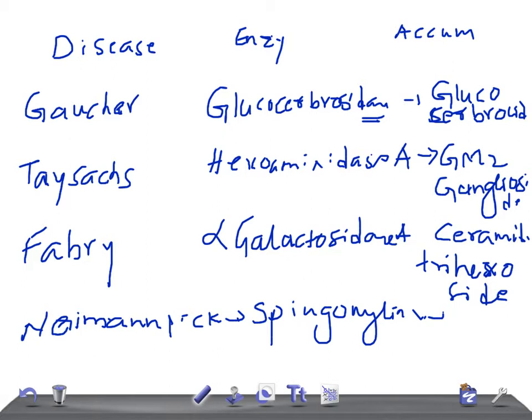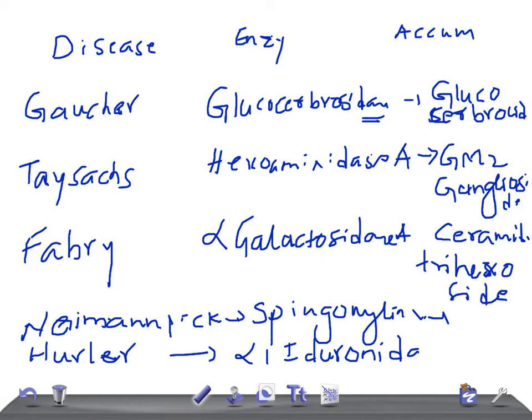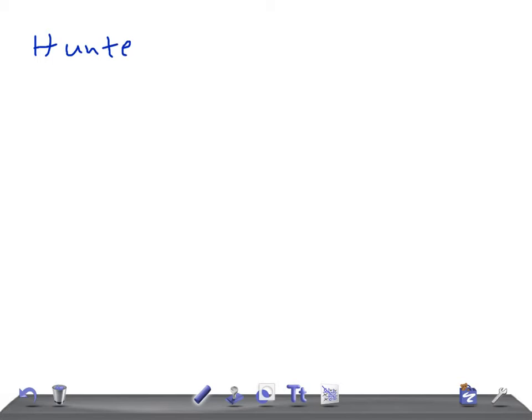Now let's talk about Hurler syndrome. The enzyme deficiency is alpha-L-iduronidase. The substances accumulated are two: dermatan sulfate and heparan sulfate. Remember — Hurler syndrome: dermatan sulfate and heparan sulfate.